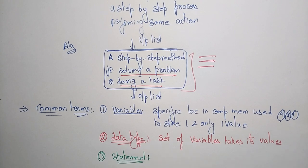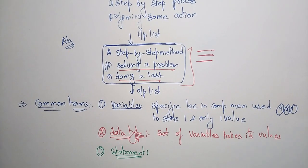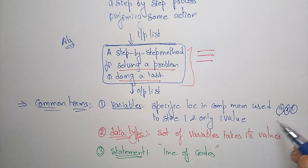The third common term used in the algorithm is statement. A statement is nothing but a line of code — you call it a statement. So the common terms used in the algorithm are: variables, data types, and statements.